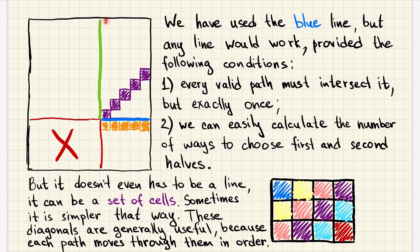But for example, we can choose this green line or we can even draw something harder, something that is not one straight line. But actually, it doesn't even have to be a line. It can be a set of cells. For example, this... This set of purple cells is great in the sense that every valid path should visit exactly one of those cells. And again, if we fix the cell, then we cannot visit the forbidden zone, so it will be easy to calculate the number of ways to choose the first half and the second half.